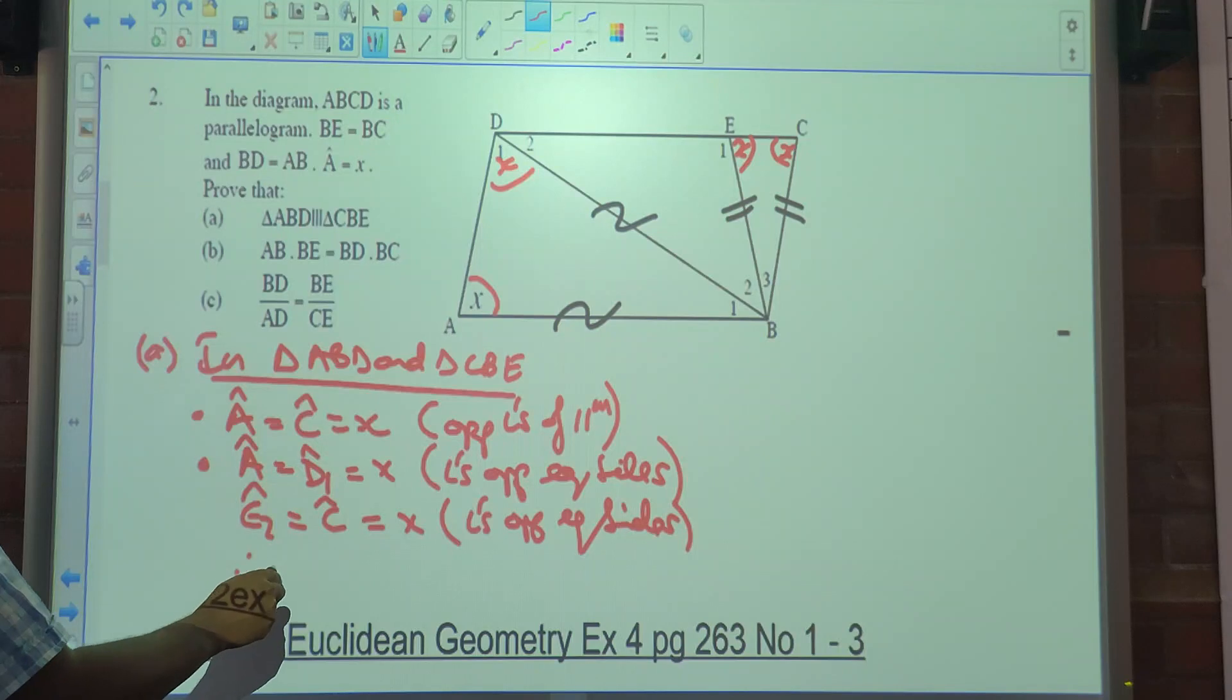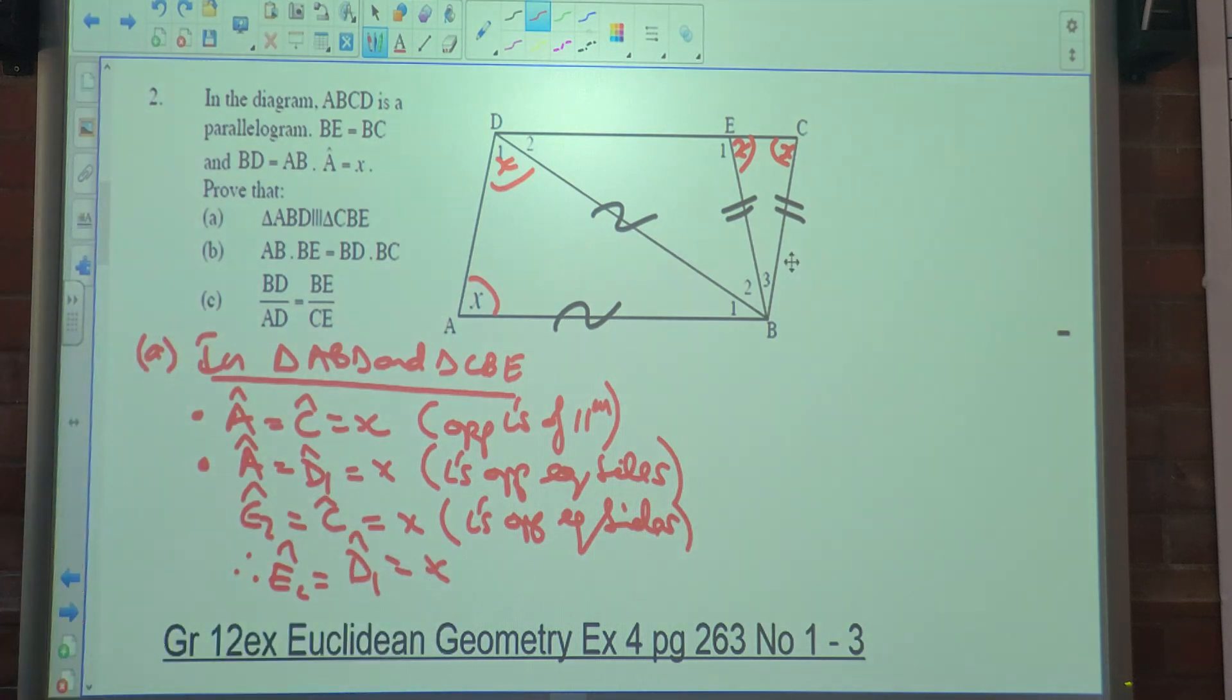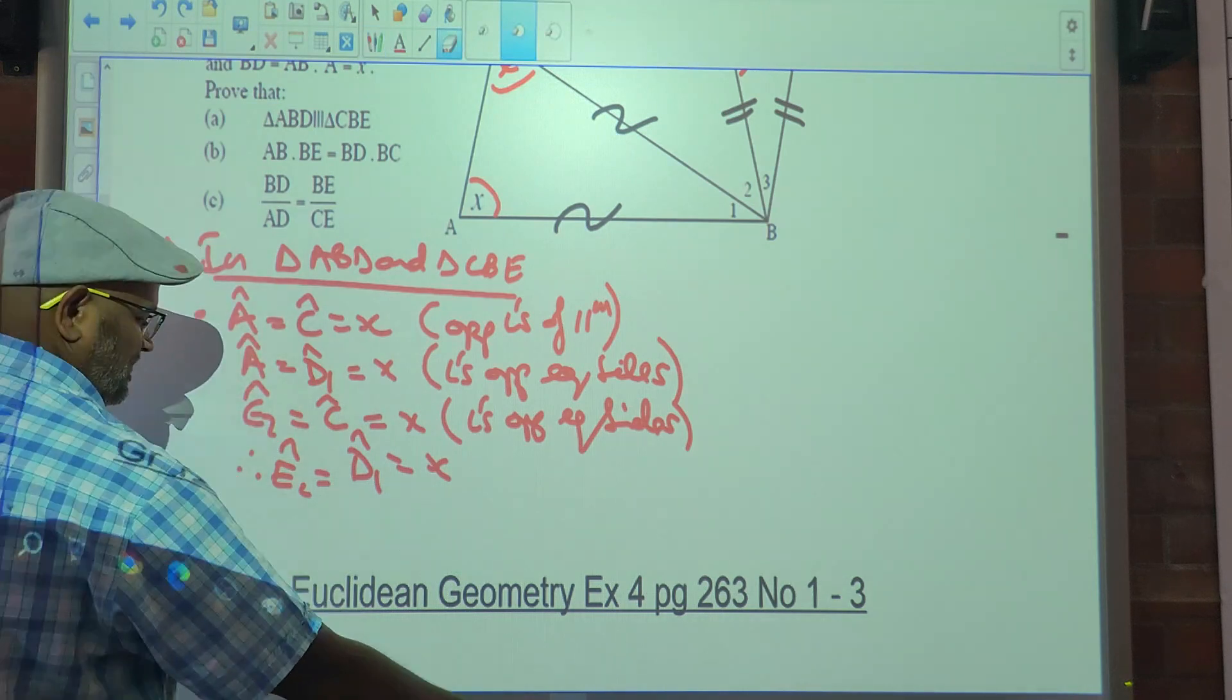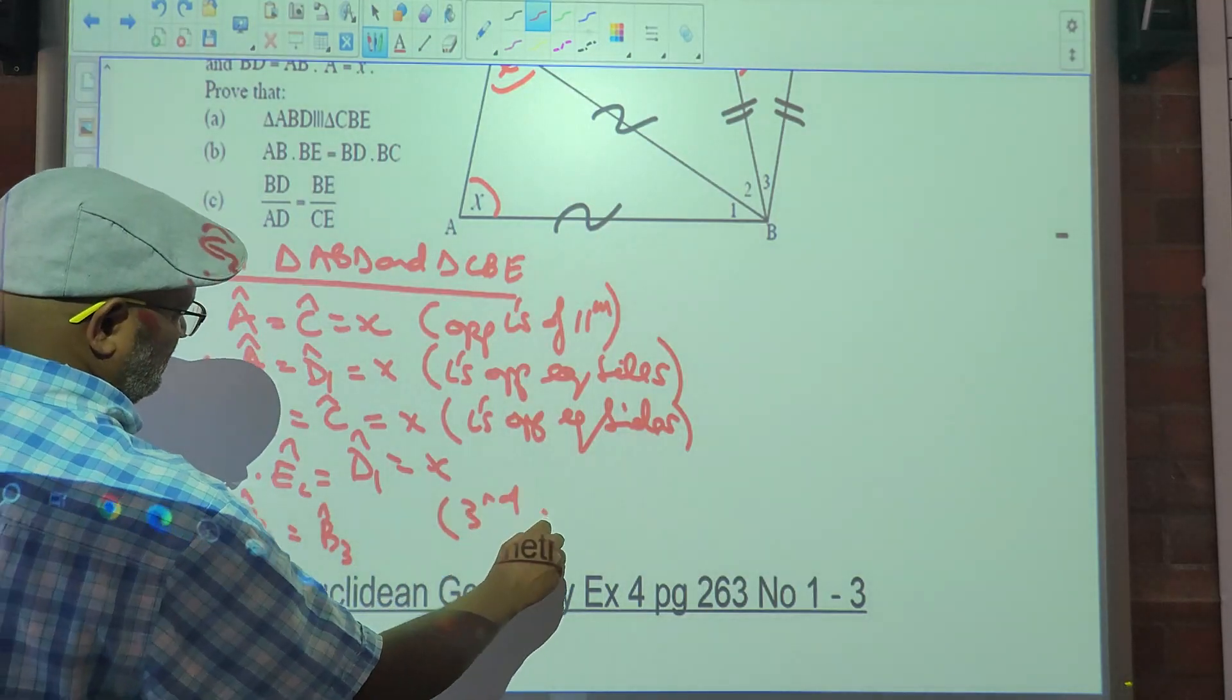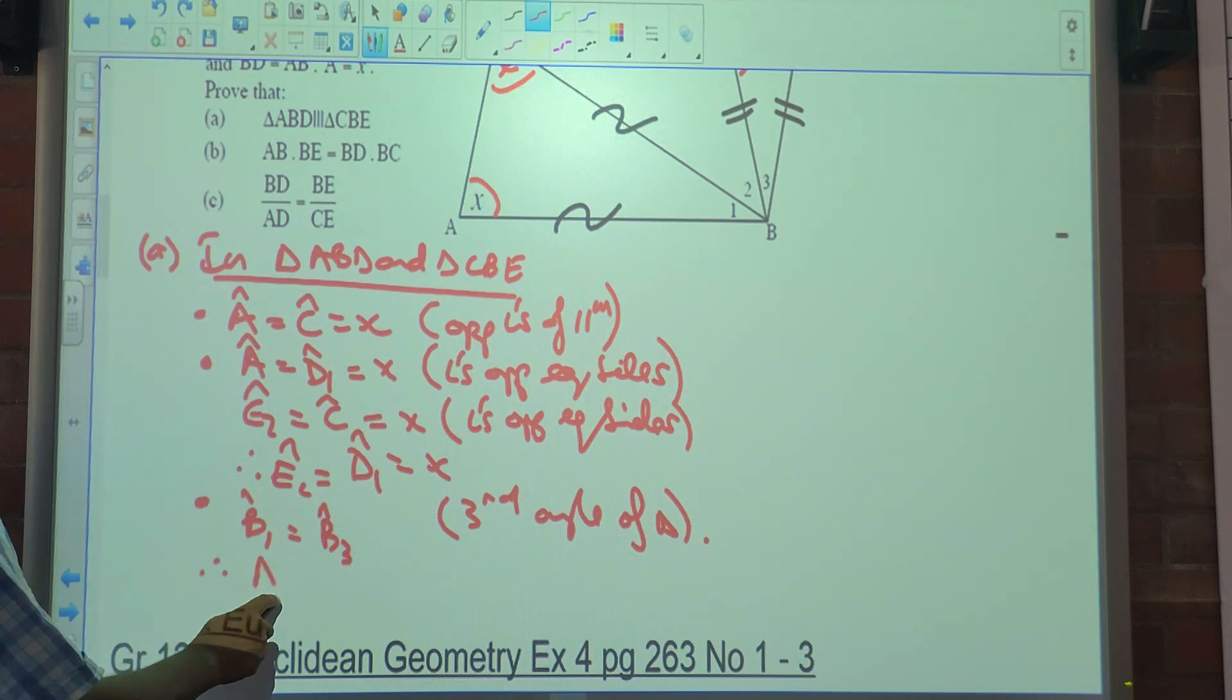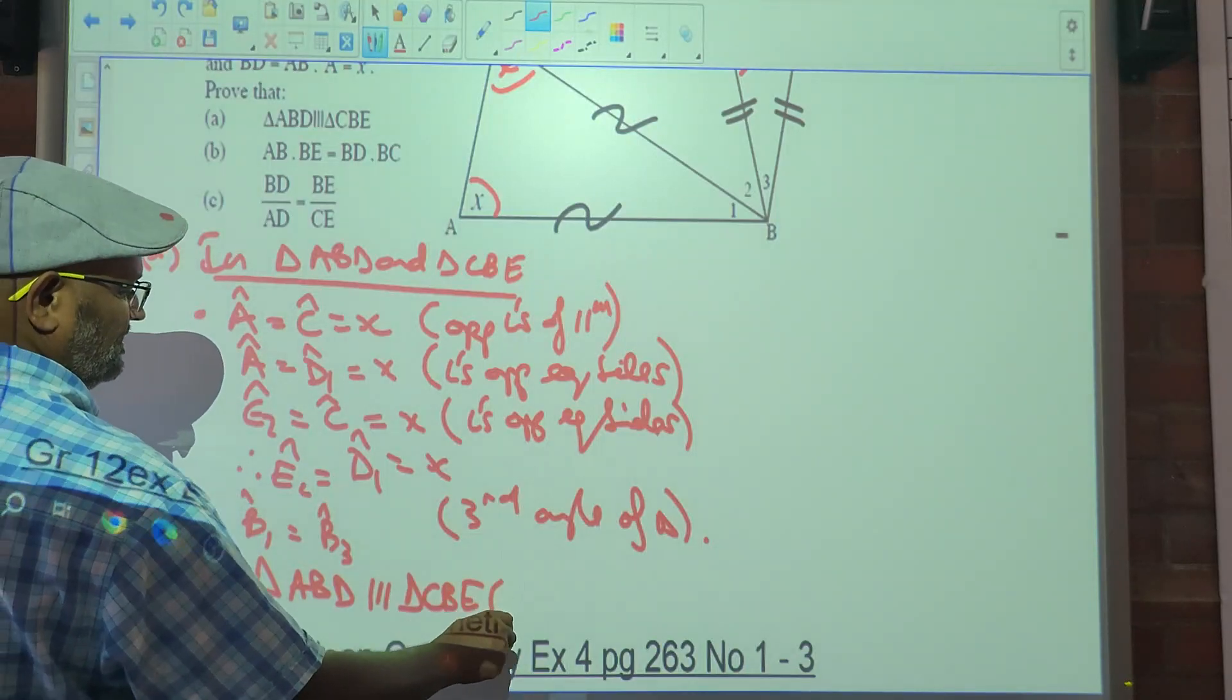First question is this. The question says prove that triangle ABD is similar to triangle CBE. So we already said that those angles are all equal. So we say as we normally do for congruence and similarity, in triangle ABD and triangle CBE. Firstly we know that angle A is equal to angle C. Why? Opposite angles of a parallelogram. So we've got the first one. Let's look at the next angle. So we know that angle A is equal to angle D1. Angle A is equal to angle D1. Why? Angles opposite equal sides. Then E2 is equal to C, which is X. Why? Angles opposite equal sides.